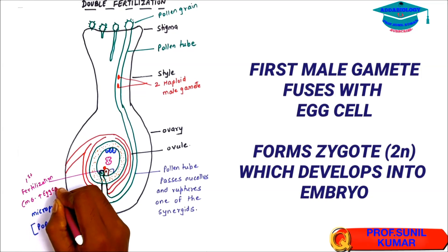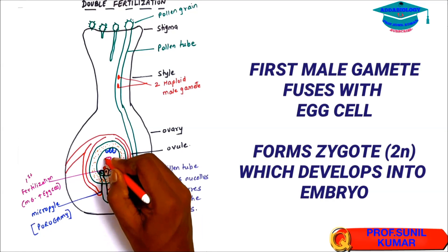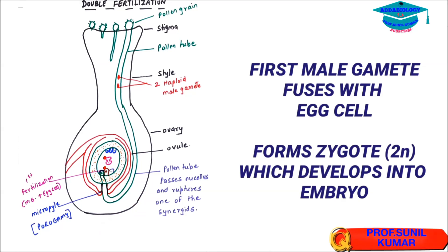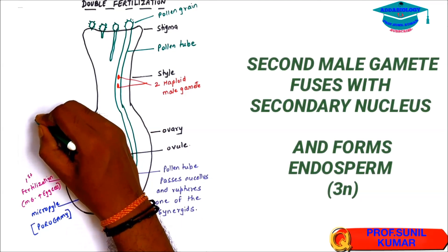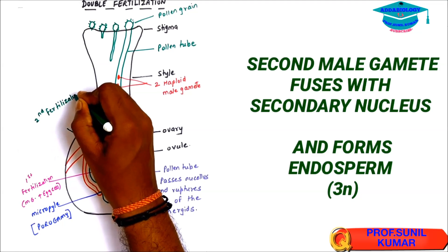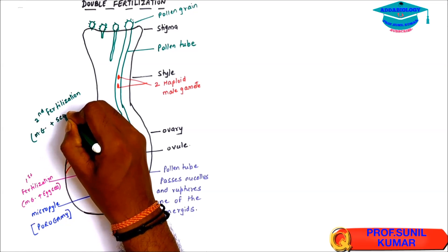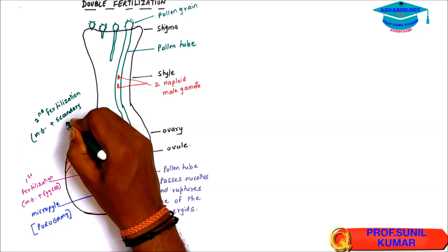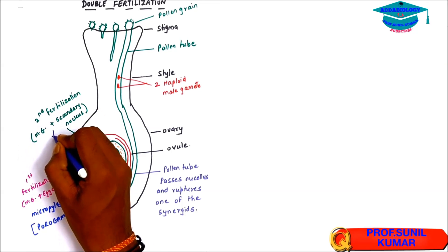The second male gamete fertilizes the secondary nucleus, which is 2n. Haploid male gamete (n) plus diploid secondary nucleus (2n) results in triple fusion, which is also called endosperm formation — forming a 3n endosperm. The role of the endosperm is to provide nourishment to the developing embryo.